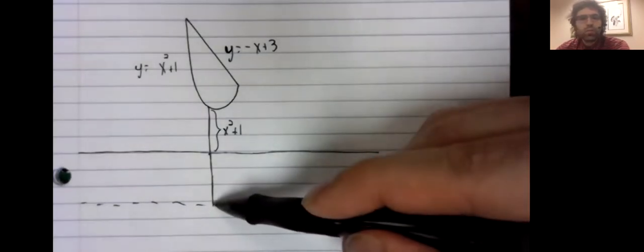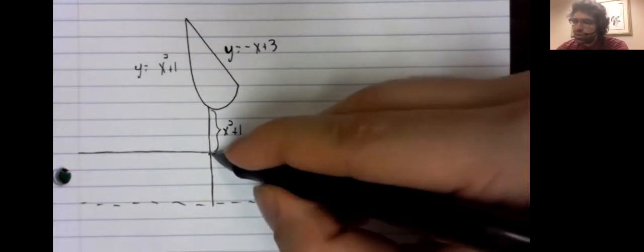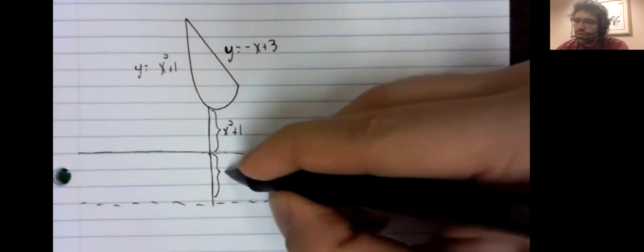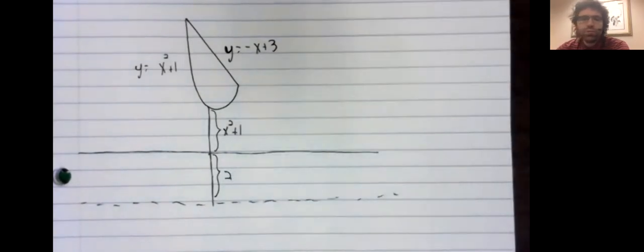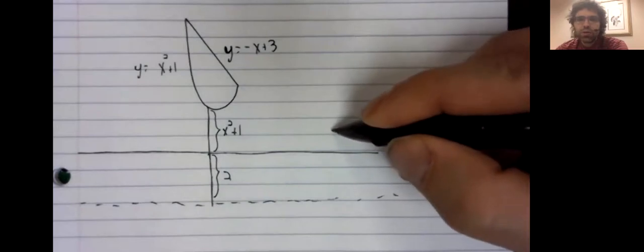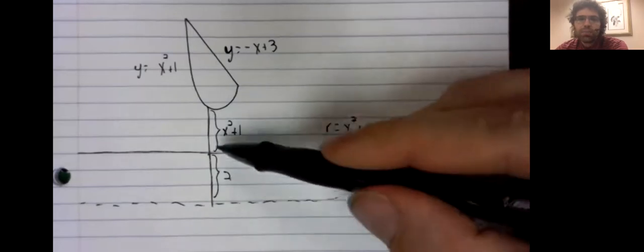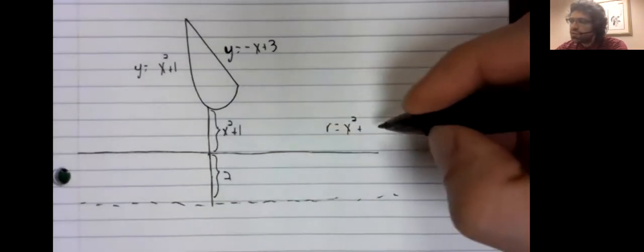And the distance from y equals negative two to y equals zero is two units. So our inner radius is going to be the sum of these distances.